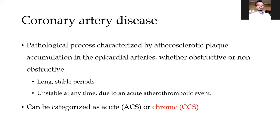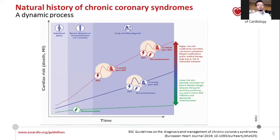That's why recently there is a reclassification of stable coronary artery disease as chronic coronary syndrome. When we see the natural history of chronic coronary syndrome, based on the intervention and degree of intervention — either with lifestyle modification, medical therapy, or interventions like revascularization — the clinical feature or natural history course may vary. The natural course might differ based on the degree of intervention in those patients.